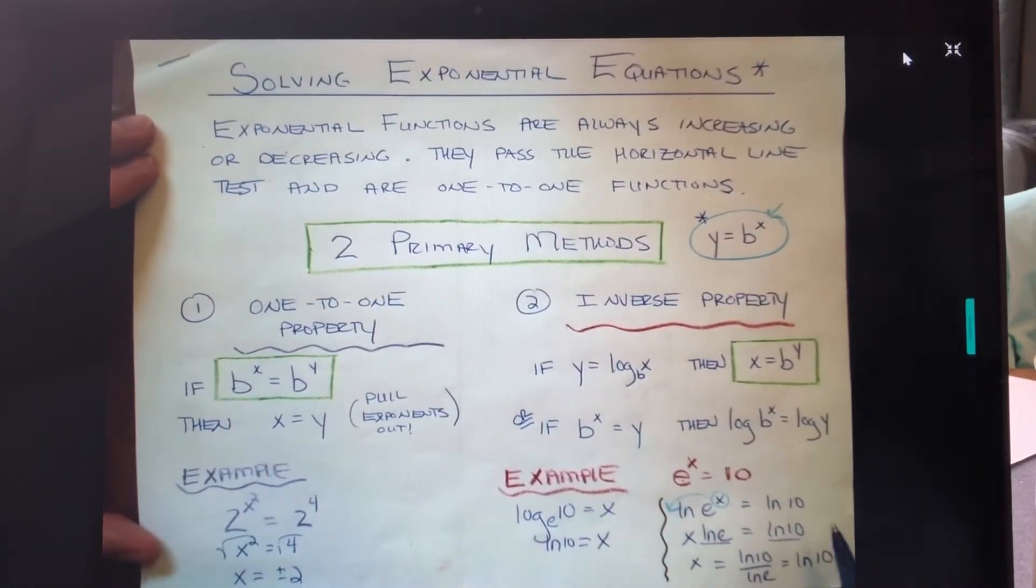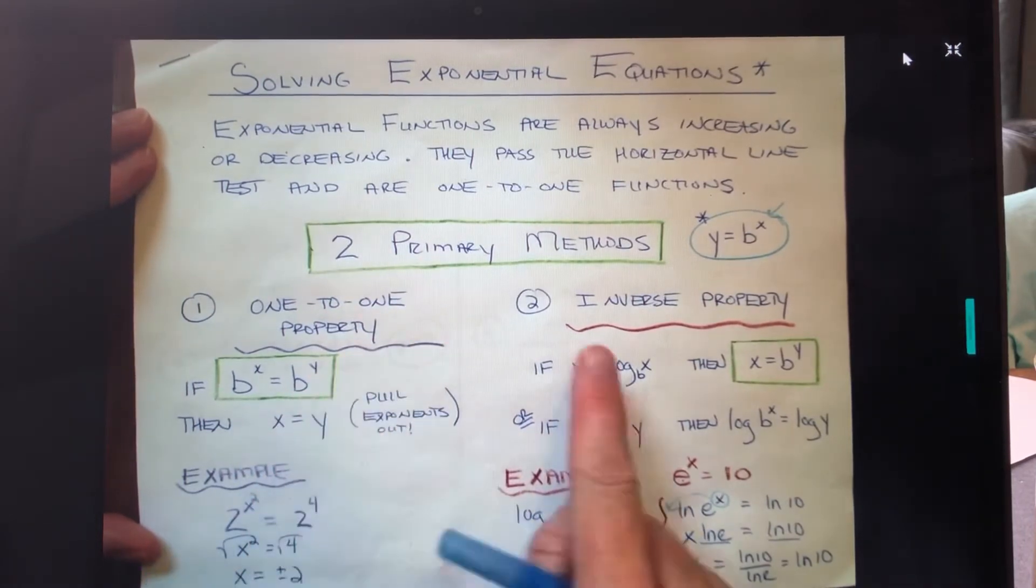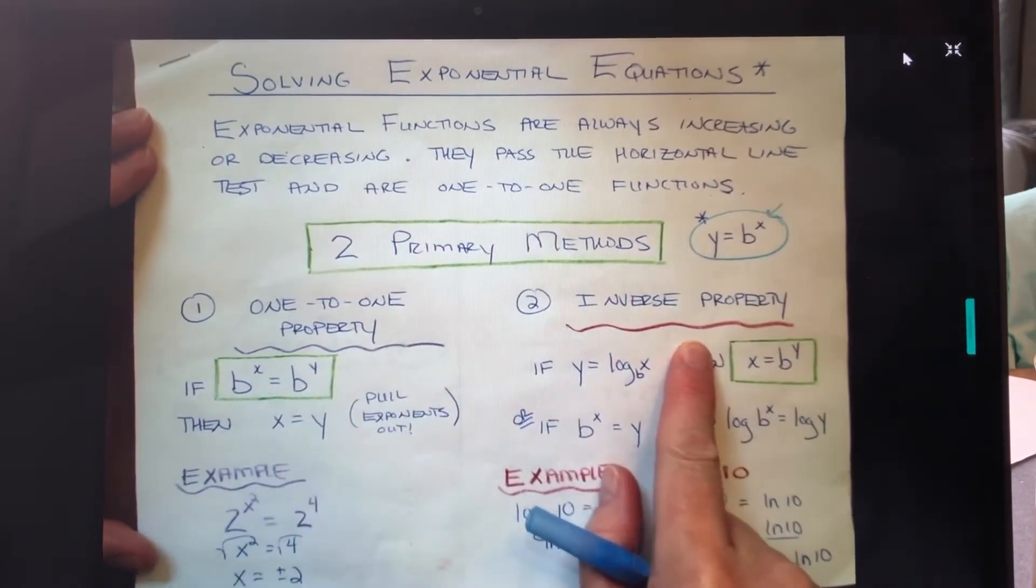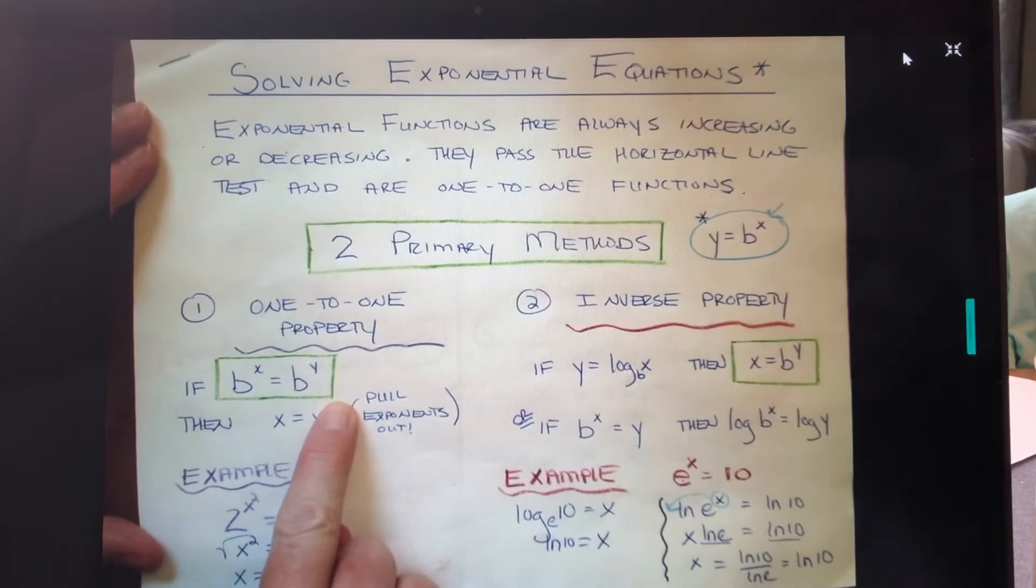Welcome back. You might recognize this summary page from the previous video where I talked about solving exponential equations using two primary methods: the first method being the one-to-one property, the second method being the inverse property. If you recall from that video, if a problem is one-to-one, that's the slickest, most efficient way to solve those.